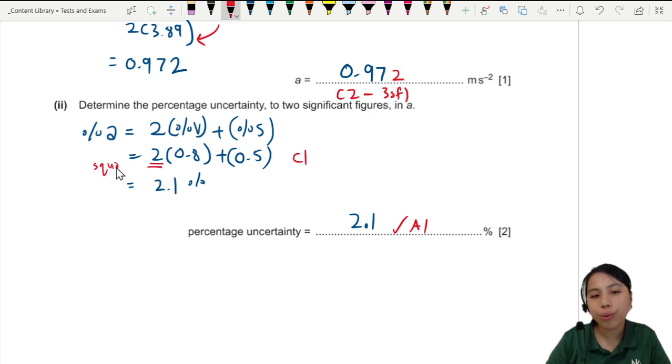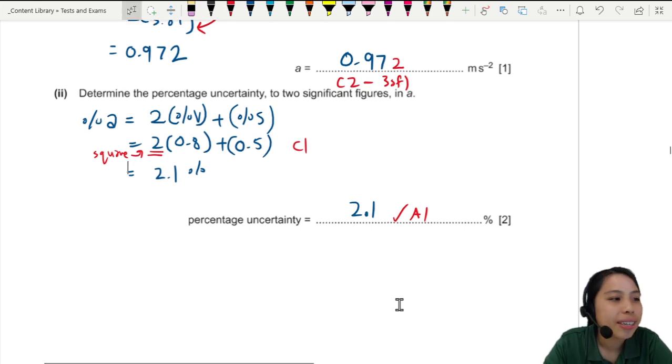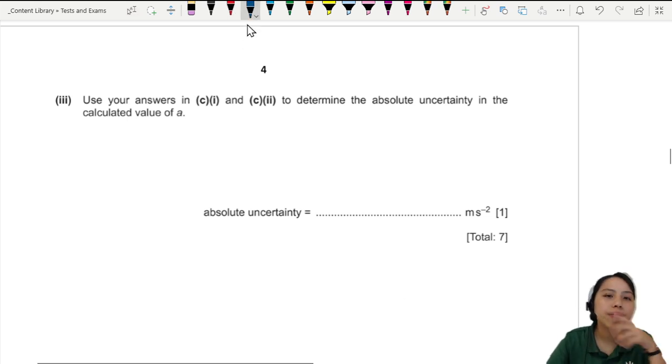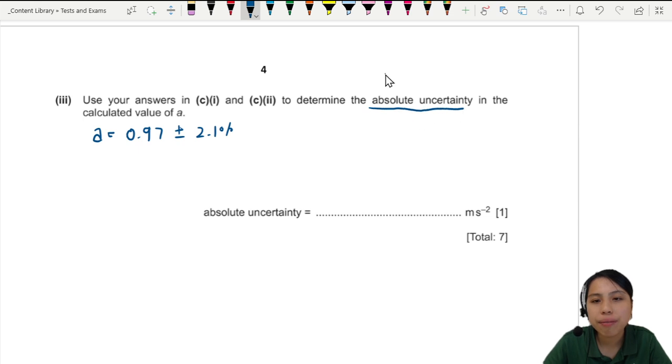Alright. Next. So, use your answers to determine the absolute uncertainty in the calculated value of A. Means, just now, we said... What was our uncertainty? Our acceleration was about 0.97. And we had the uncertainty of plus minus 2.1. So, you want to find the absolute uncertainty. Means, it must have a unit of meters per second squared. So, what is 2.1% of 0.97? Let's find that out.